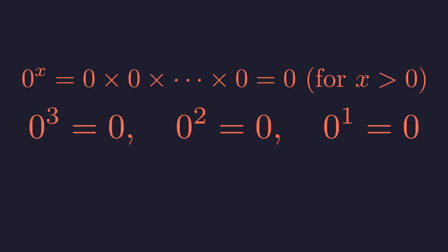If we follow this unwavering pattern as the exponent gets closer and closer to zero, then it appears that zero to the power of zero ought to be zero.